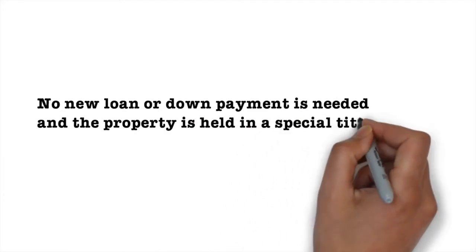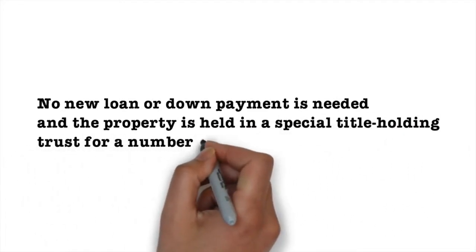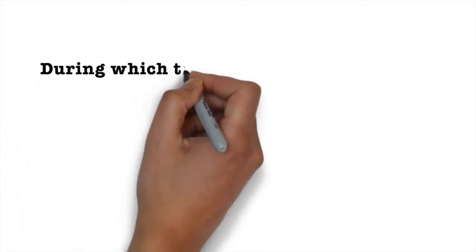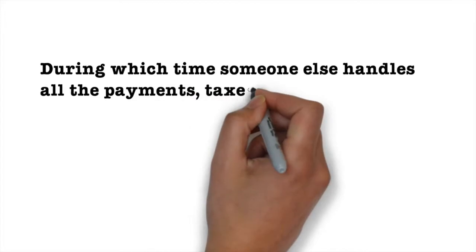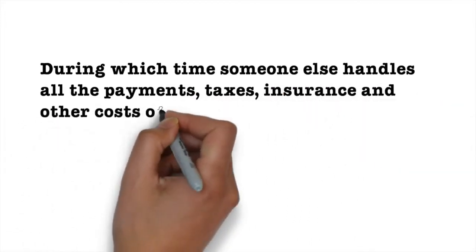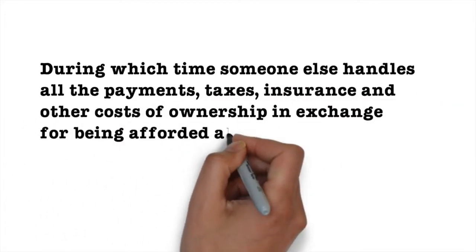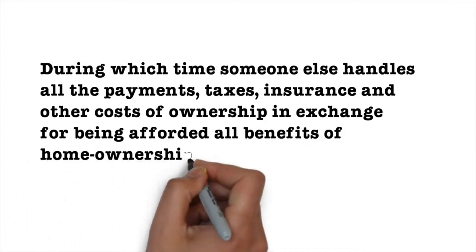The property is held in a special title holding trust for a number of years, during which time someone else handles all the payments, taxes, insurance, and other costs of ownership in exchange for being afforded all benefits of homeownership without a down payment, a new loan, or standard credit qualifying.